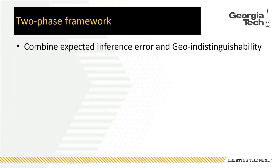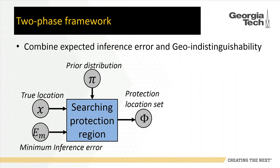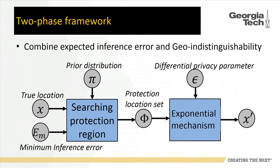Our work achieves adaptive noise levels according to prior distribution by combining the two different privacy notions — expected inference error and geo-indistinguishability — with our two-phase framework. Given the prior distribution and the minimum inference error specified by the user, we first search for a protection region. This protection region is used to hide the user's true location. After finding this region, we run an exponential mechanism which achieves epsilon differential privacy to generate the fake locations.